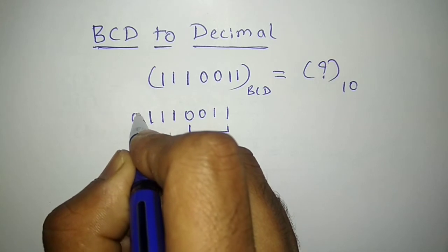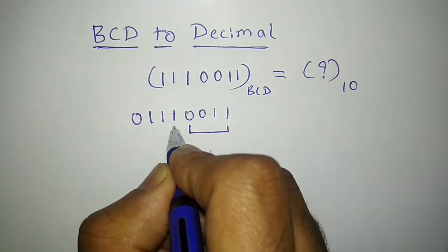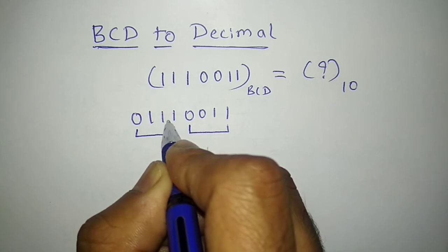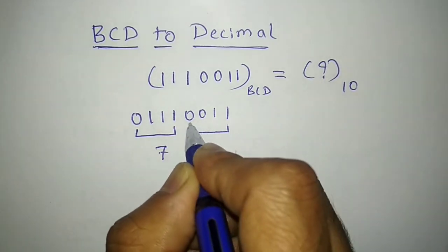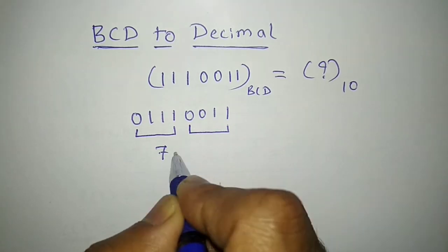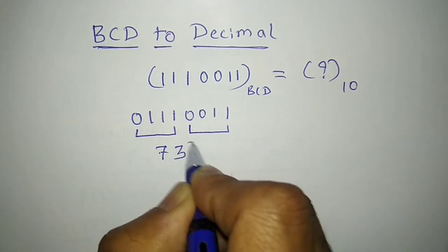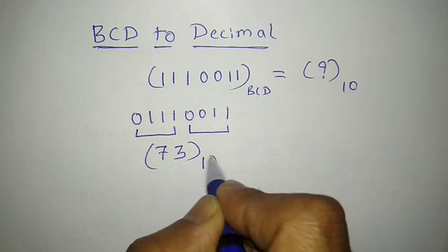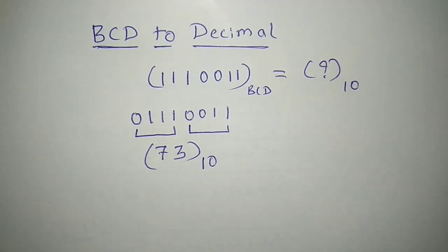So what is its equivalent in decimal? This is 7. And what is its equivalent in decimal? This is 3. So equivalent of that BCD number in decimal is 73. That's it. Thanks for watching.